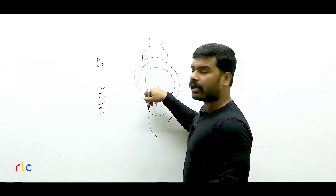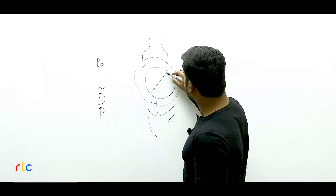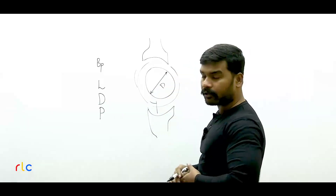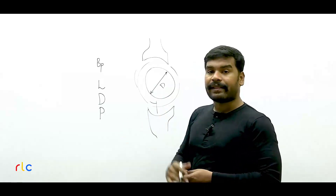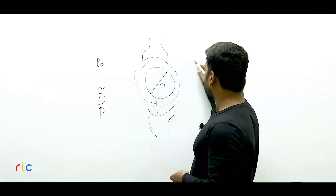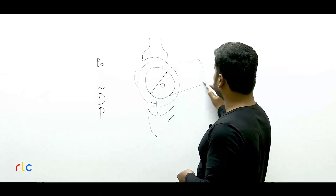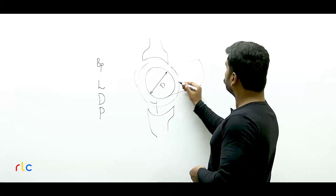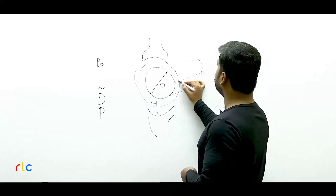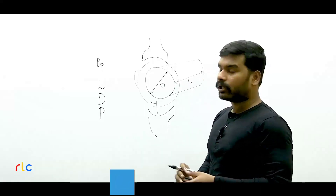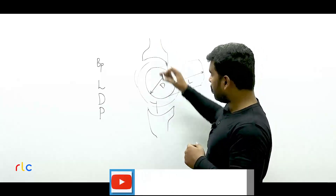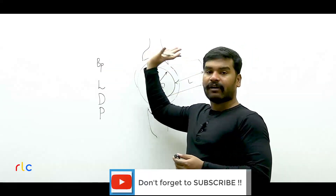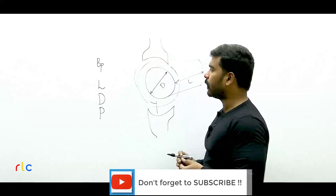Suppose this is the armature. The diameter of the armature is D. Now what is the length of the armature? The length of the armature is L. This is a cylindrical object, not a 2D object — it's not just a circle, it is a cylinder. The length of the cylinder itself is the length of the armature core being referred to here. And the flux density Bp is the peak value of the flux density in the air gap.